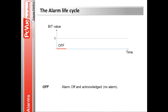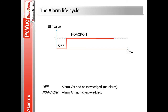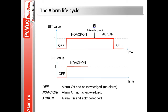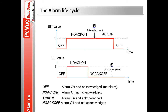First, the bit value is equal to zero — the alarm is off and acknowledged; there's no alarm. The alarm is on and has not been acknowledged by a user. A user acknowledges the alarm, which becomes on-acknowledged. The alarm becomes off when the bit value goes to zero. If the alarm is on and not acknowledged, and the bit value goes to zero, the alarm becomes off-not-acknowledged, and then off whenever the user acknowledges it.